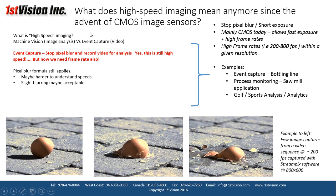For event capture, we can stop pixel blur and do video recording for analysis — streaming video onto a computer for post-analysis. The pixel blur formula still applies, though it may be harder to know the speeds involved, such as a moving armature on machinery. Some trial and error may be needed, and slight blurring may be acceptable since we're doing event capture rather than measurement applications.